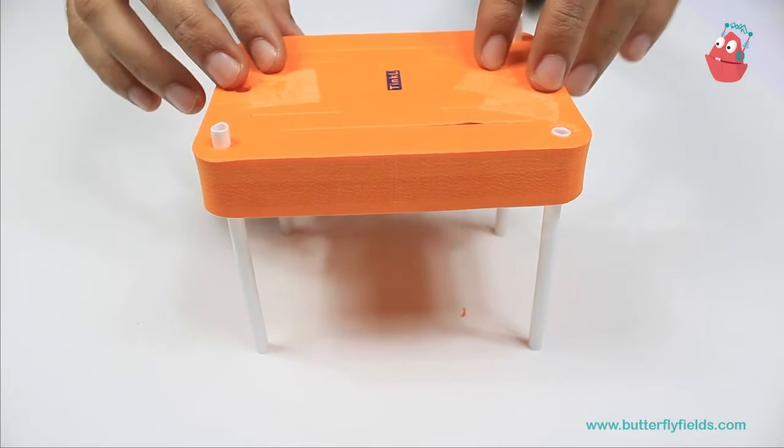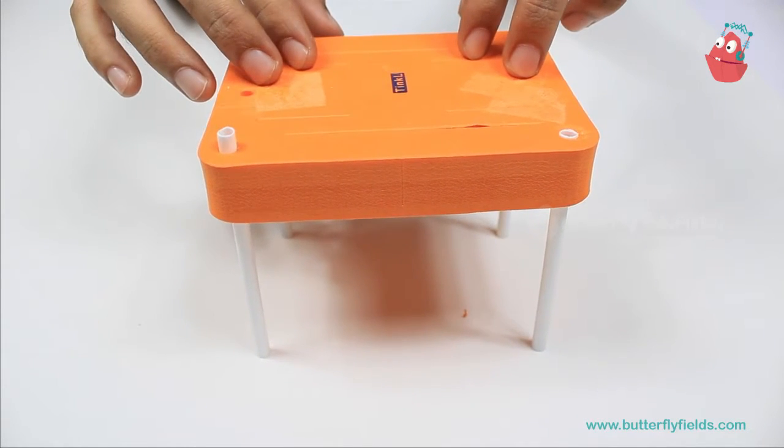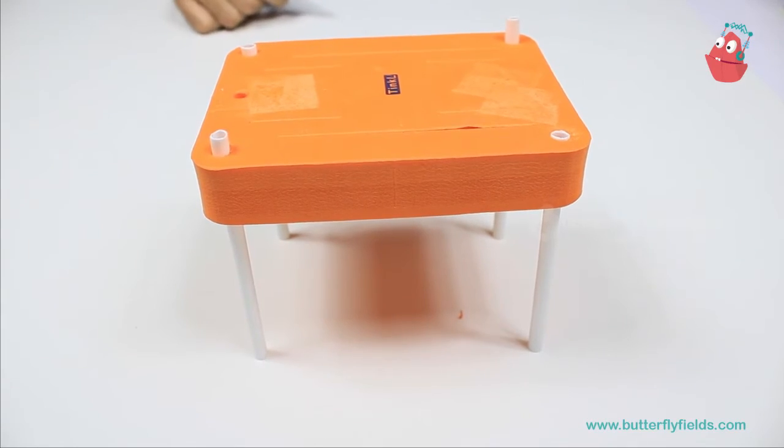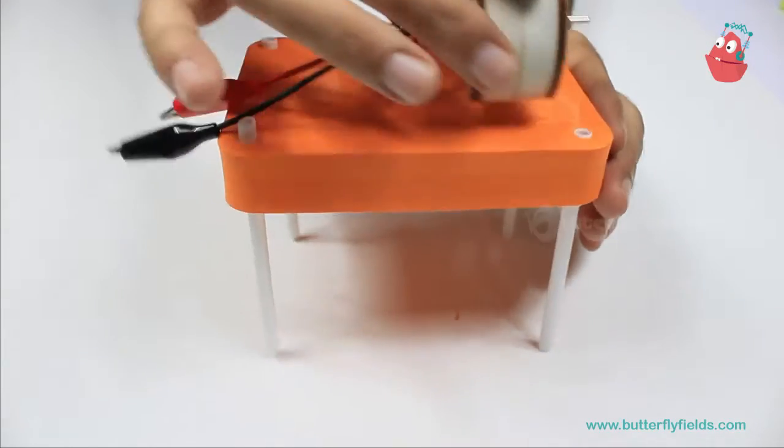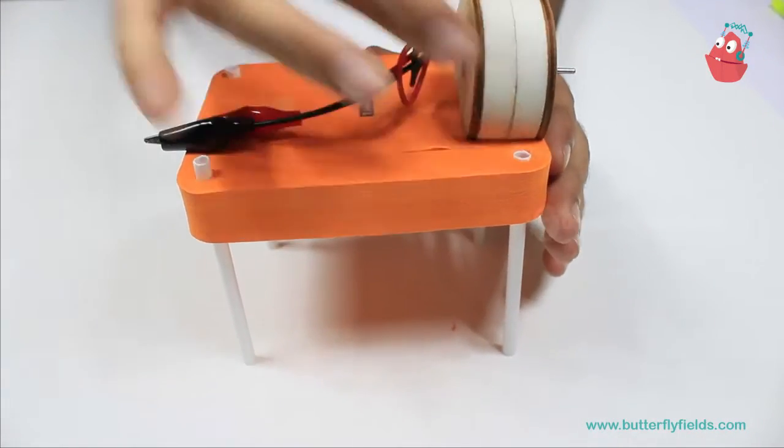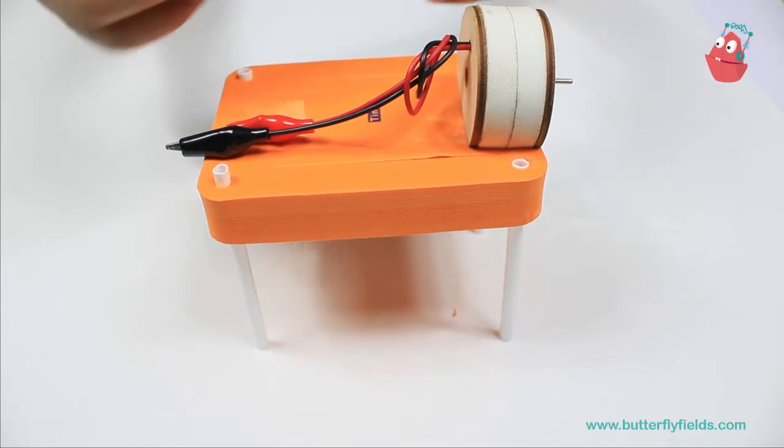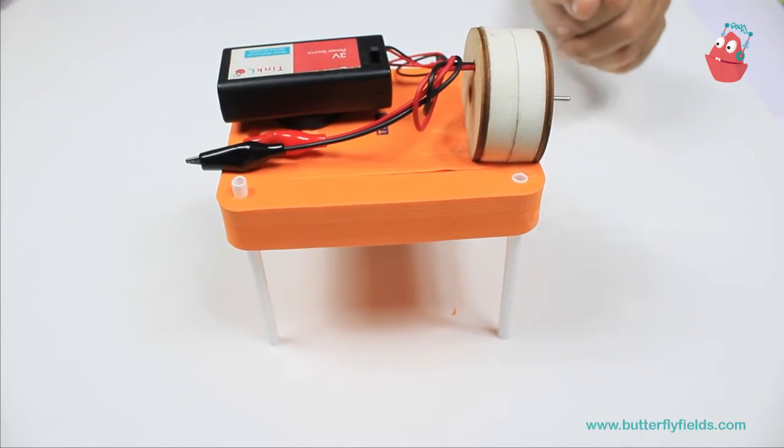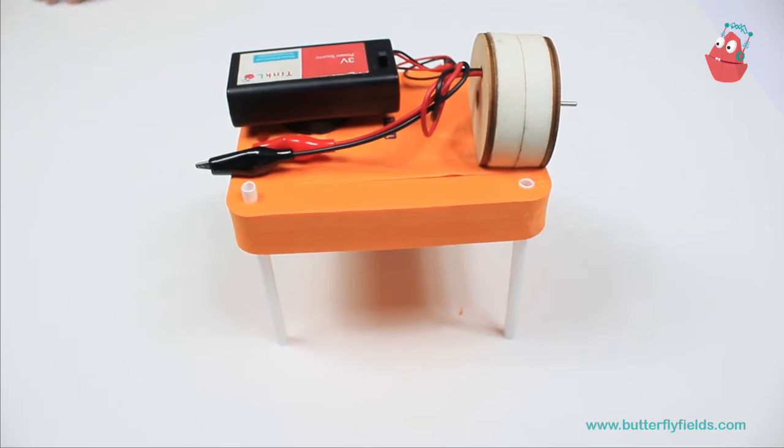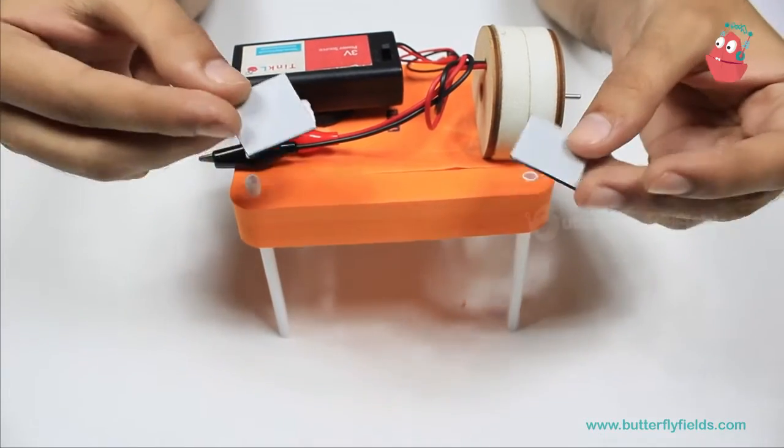So once all these are at the same level, next we are going to attach a motor onto it and a battery, and for this we are going to use a few double sided tapes.